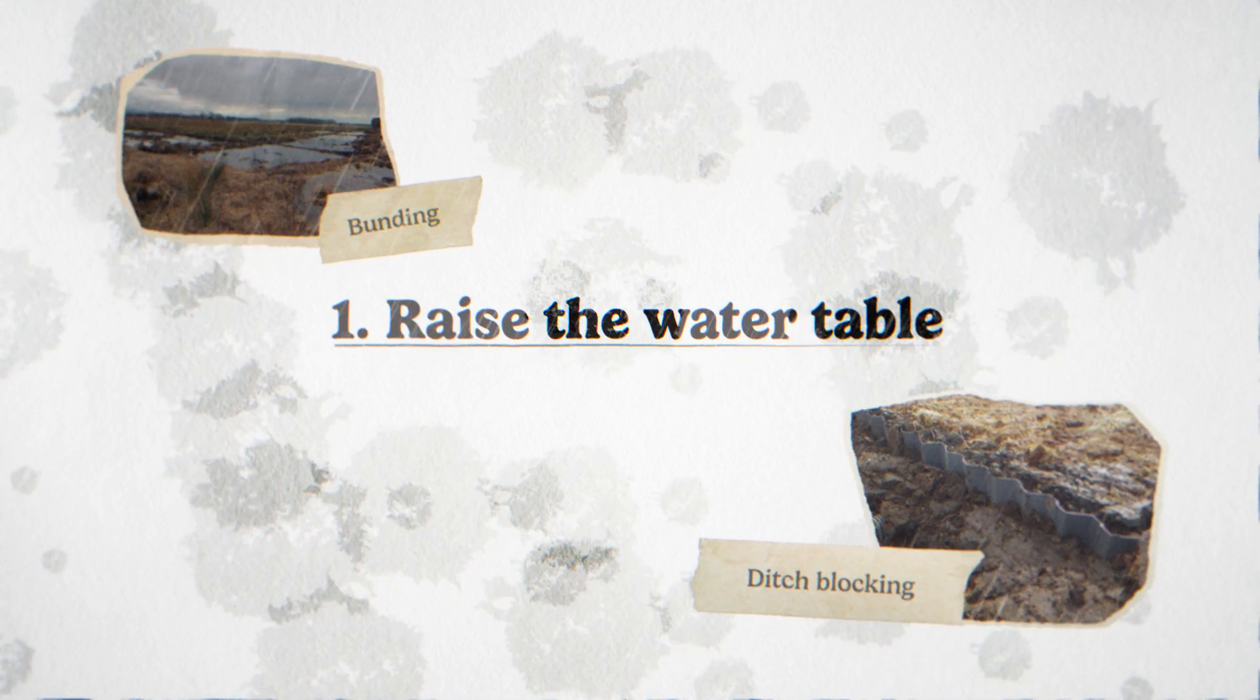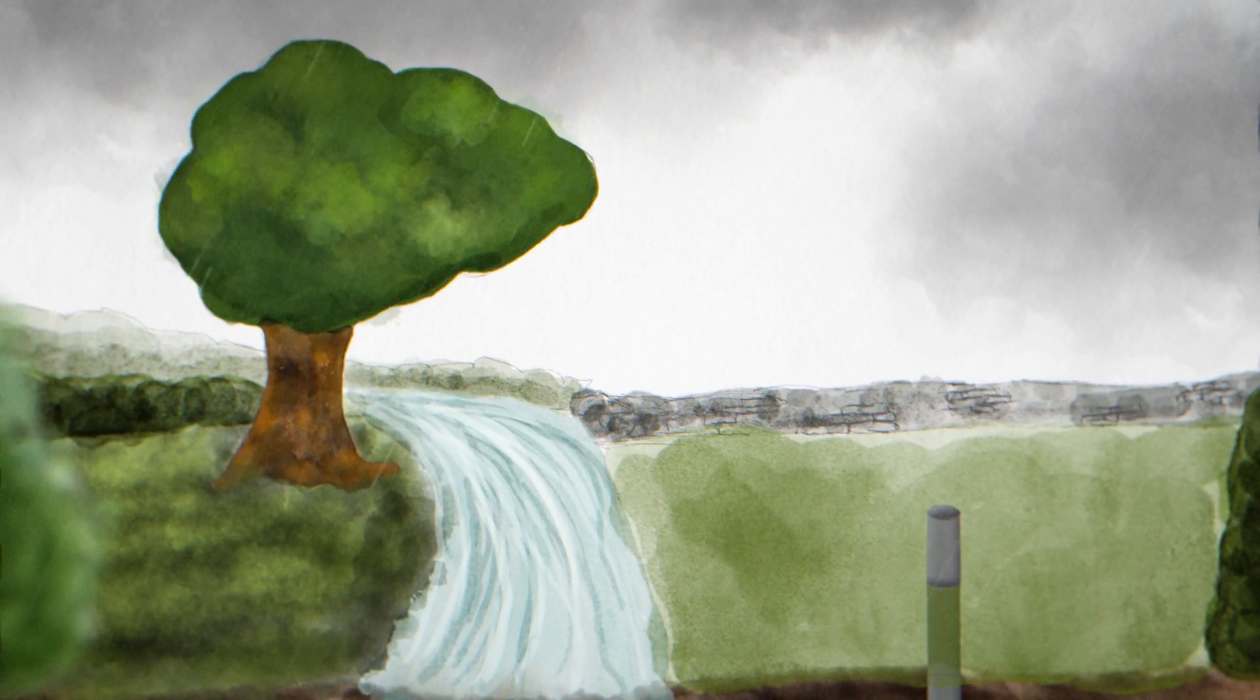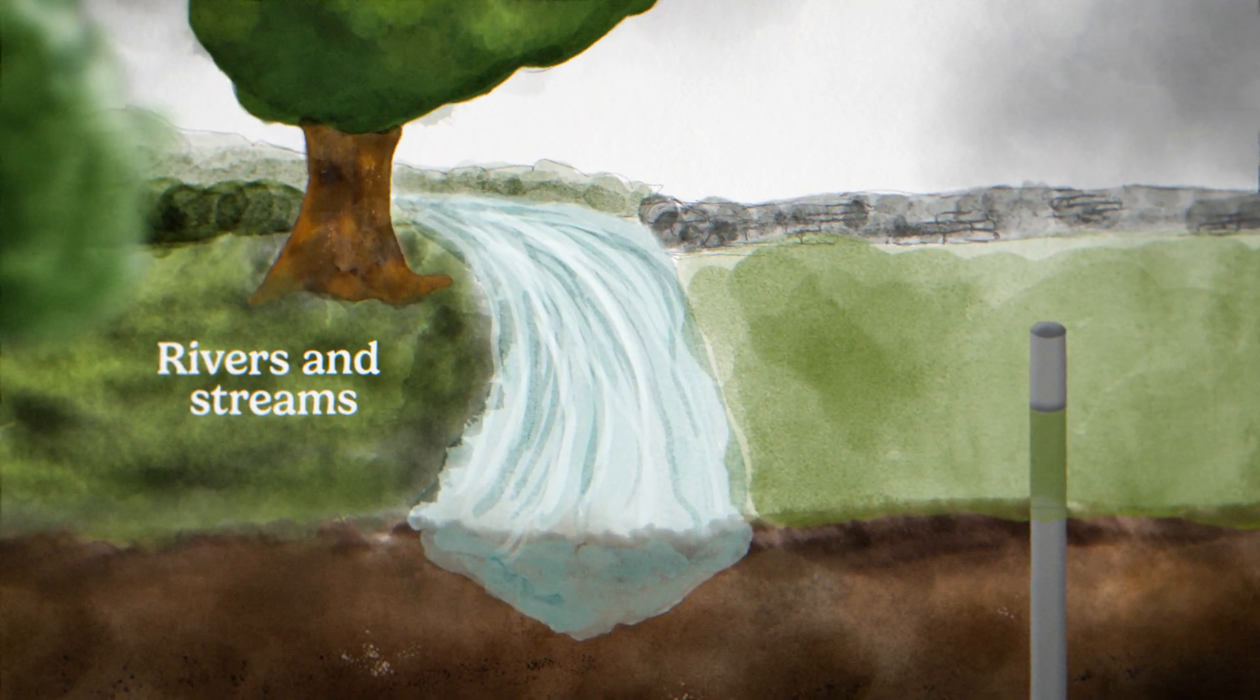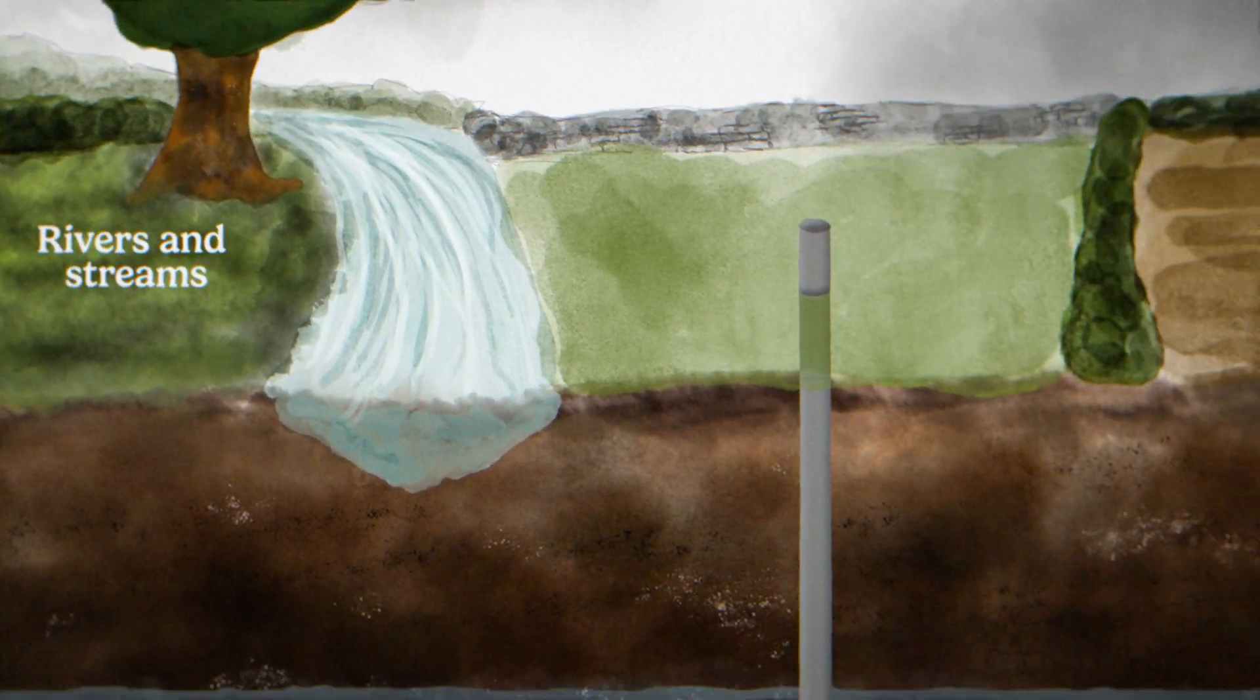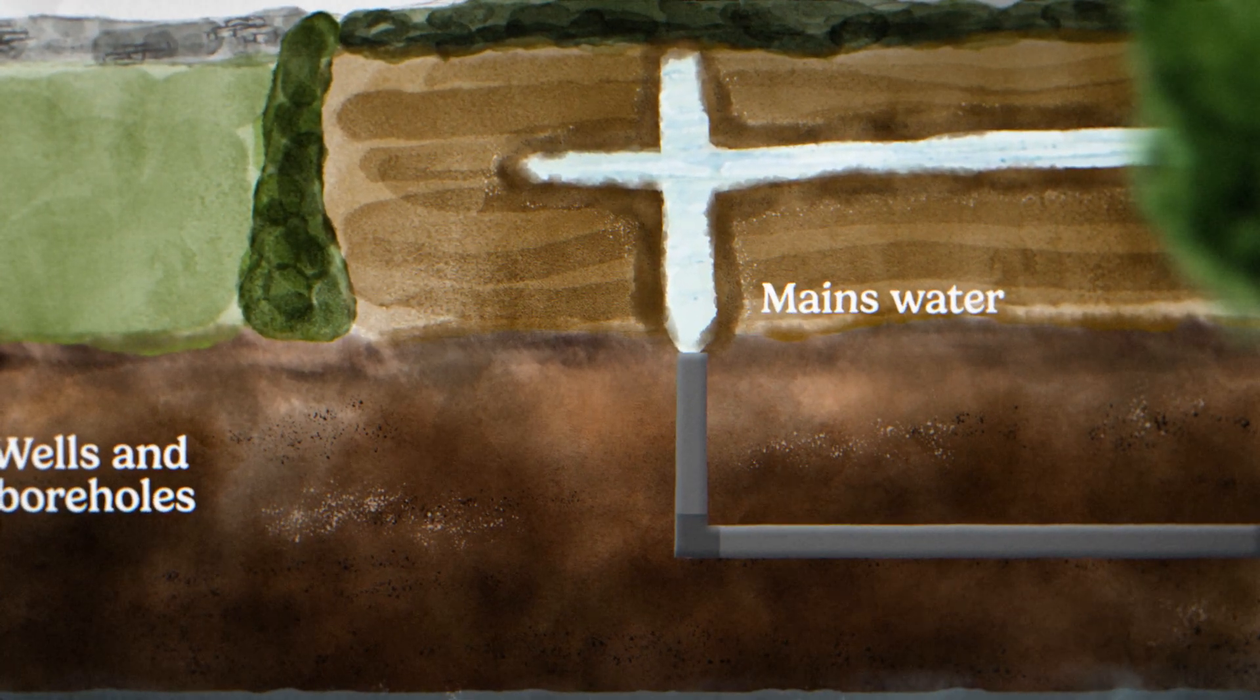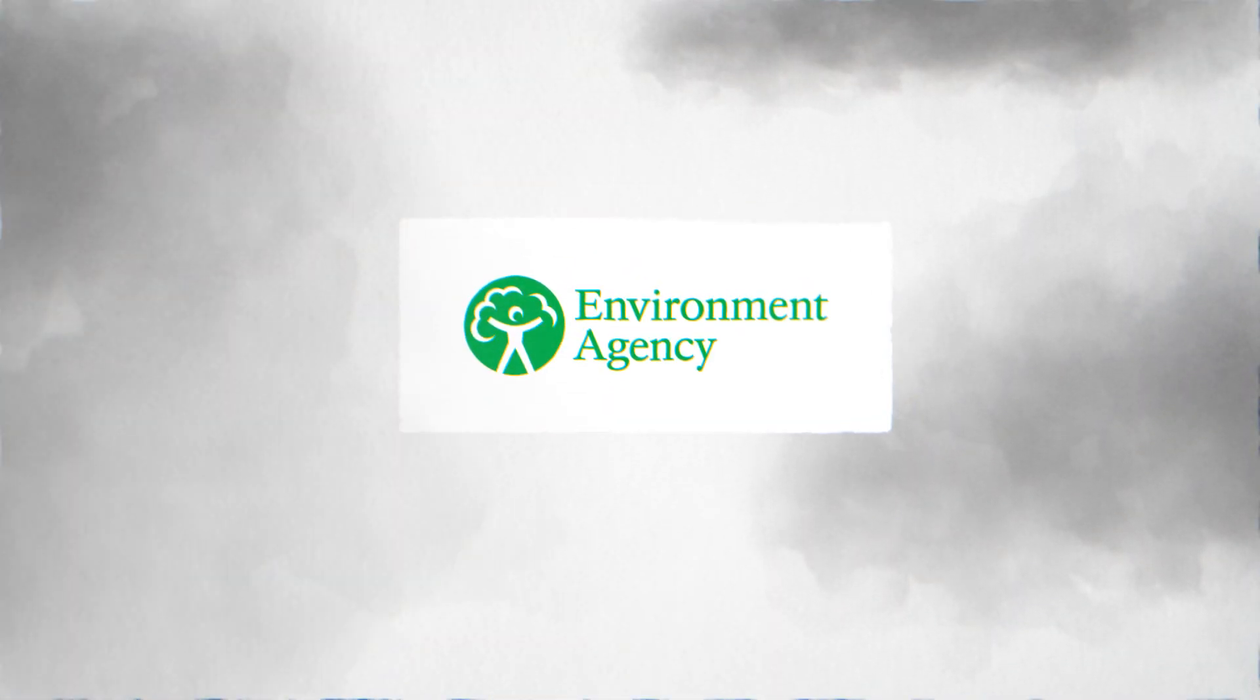Rain is the cheapest and most natural solution for re-wetting your land, but it's not always reliable, so you might need to consider other sources such as abstracted water from rivers and streams, groundwater from wells and boreholes, or mains water. Requests for additional water needs may require a permit or consent from the EA and will need to be considered amongst other local demands.